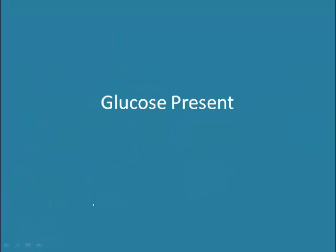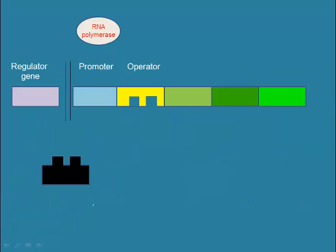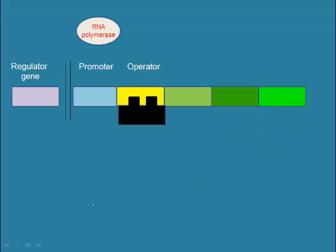Let's take a look at what happens when glucose is present. When glucose is present, it is not desirable to waste cellular energy creating enzymes to digest lactose. The genes that code for these enzymes need to be repressed, or shut off.